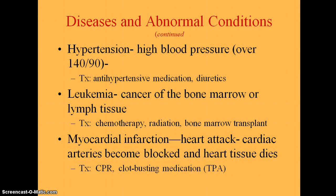Leukemia is cancer of the bone marrow or lymph tissue and results in a large number of immature, poorly functioning white blood cells. Symptoms include fever, pallor, swollen lymph tissue, fatigue, anemia, easy bruising, bleeding gums, and joint pain. There are acute and chronic forms, and treatment depends on the type but can include chemotherapy, radiation, or bone marrow transplants.